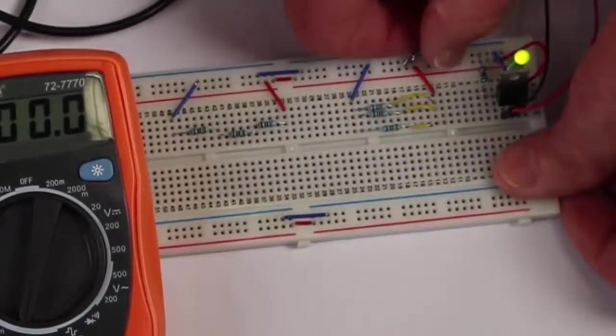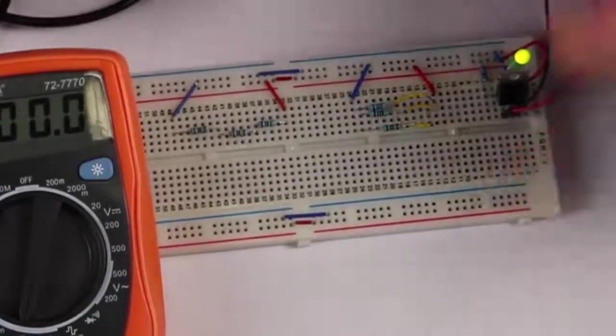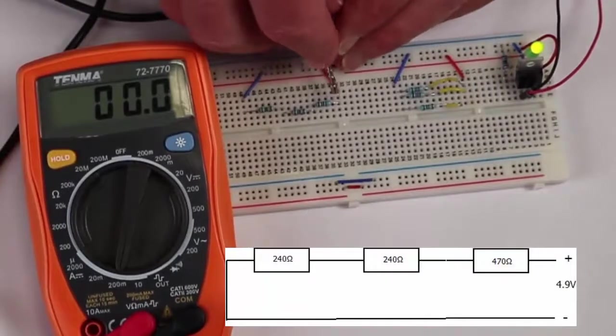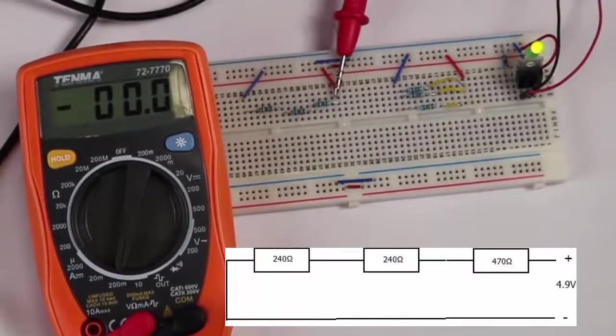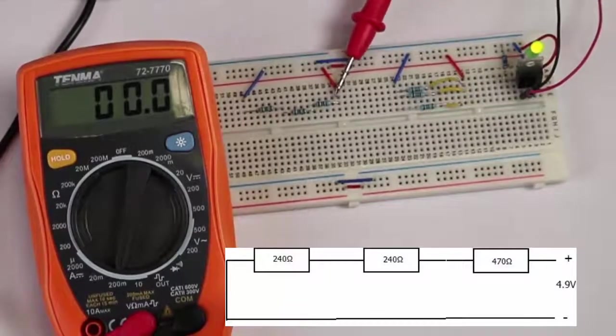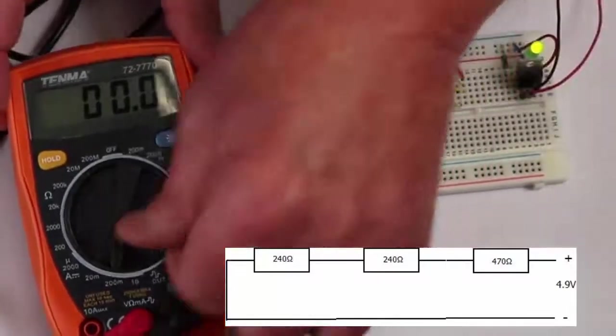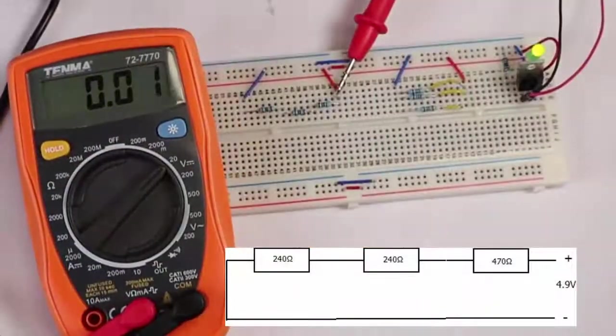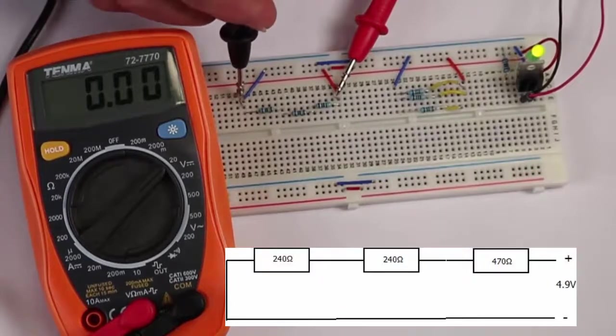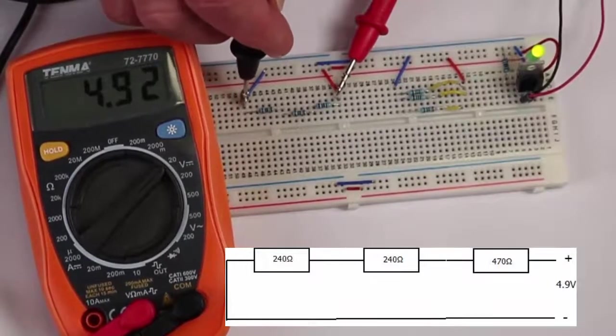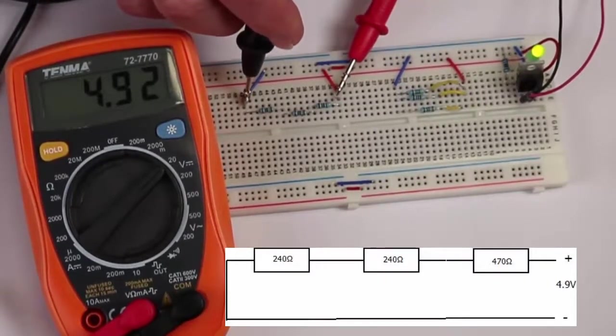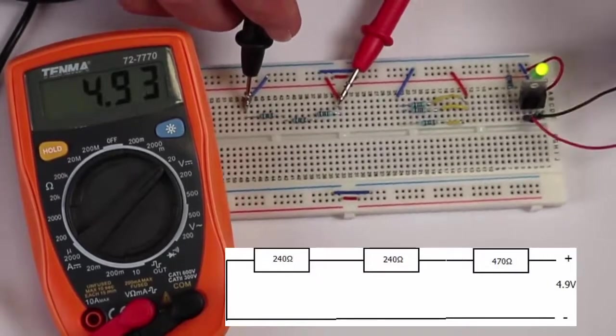The second one is a bit easier because with voltages we don't have to disturb the circuit because voltages are across components. So we just verify our voltage going in here and set the meter to voltage first. Be careful. And we see it's a nominal 5V but it's actually 4.92 probably because our battery has dropped down a little bit.